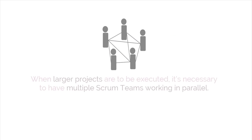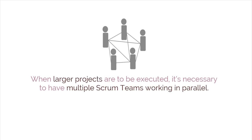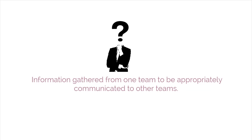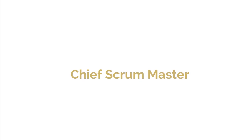When there are larger projects to be executed, it's necessary to have multiple Scrum Teams working in parallel. It's crucial that information gathered from one team be appropriately communicated to other teams. The Chief Scrum Master is responsible for this activity.